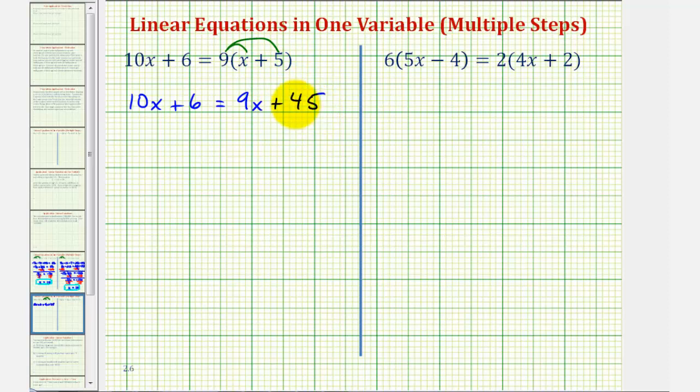Next notice how we have variable terms on both sides of the equation, and to solve for x we need x on one side of the equation. So we can either subtract 9x on both sides or subtract 10x on both sides, but because we normally prefer the variable term to be on the left side of a linear equation, let's subtract 9x on both sides.